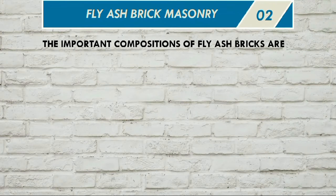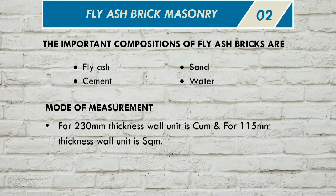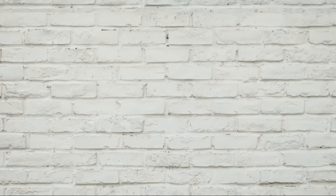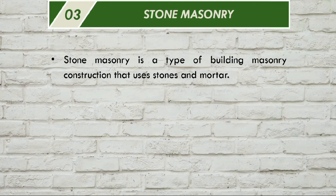The important components used in fly ash brick masonry are fly ash, cement, sand, and water. The mode of measurement: 230 mm thickness is cubic meters, and 115 mm thickness is square meters.